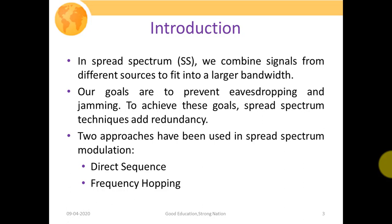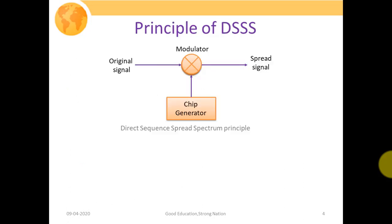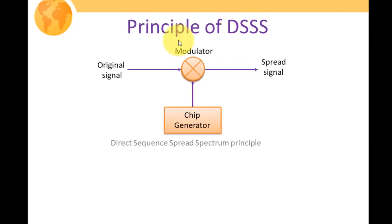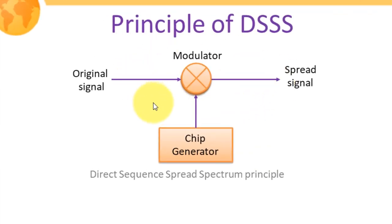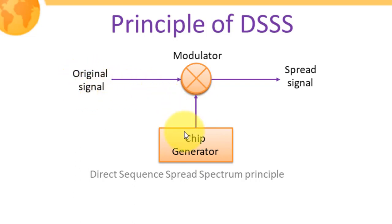In this lecture we'll discuss direct sequence spread spectrum. This figure shows how the direct sequence system works. It has a modulator and a chip generator. We are directly multiplying our original signal with the chip, and with the help of these chip sequences our signal gets spread out.